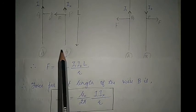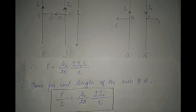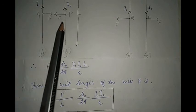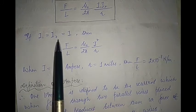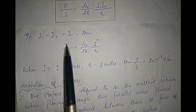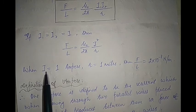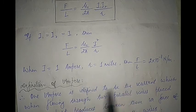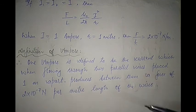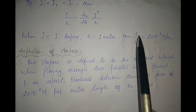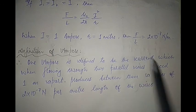According to Newton's third law of motion, wire A also experiences the same magnitude of force, as it carries current i1 and is placed in the magnetic field of wire B. Finally, when we put i1 = i2 = i, this expression becomes F/l = (μ₀ / 2π) × (i² / r). If i = 1 ampere and r = 1 meter, then F/l = 2 × 10⁻⁷ newton per meter. From here we get our definition of ampere: 1 ampere is defined as the current which, when flowing through two parallel wires placed one meter apart, produces a force of 2 × 10⁻⁷ newton per meter of the wires.